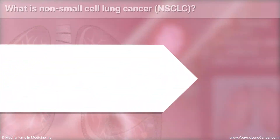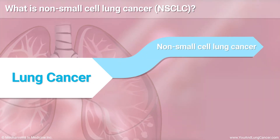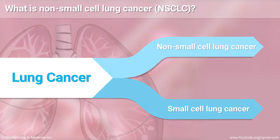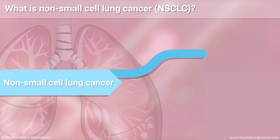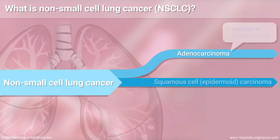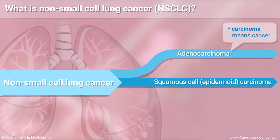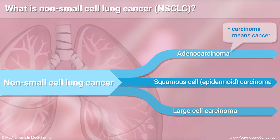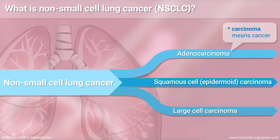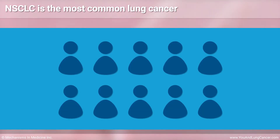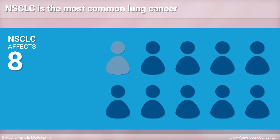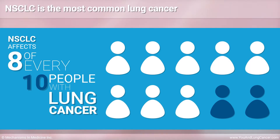Non-Small Cell Lung Cancer is one of two major types of lung cancer. The other is small cell lung cancer. The most common subtypes of Non-Small Cell Lung Cancer are adenocarcinoma, squamous cell epidermoid carcinoma, and large cell undifferentiated carcinoma. Non-Small Cell Lung Cancer is the most common type and affects about 8 of every 10 people with lung cancer.